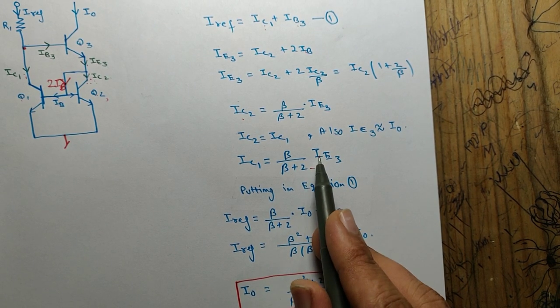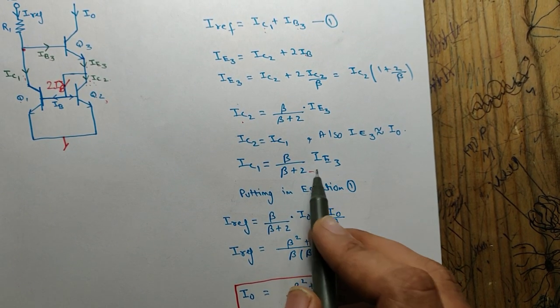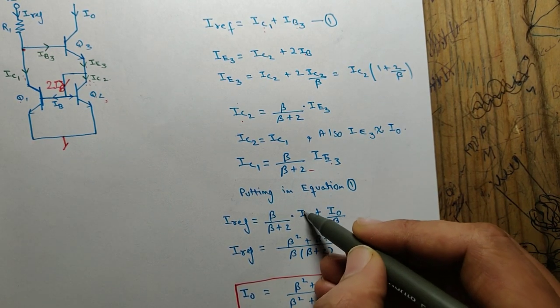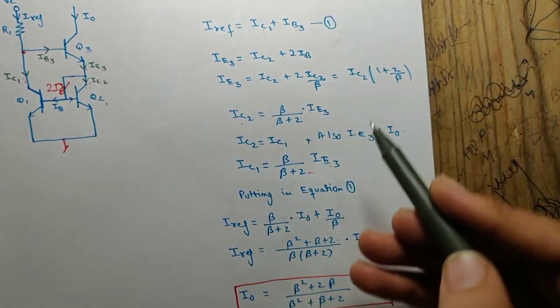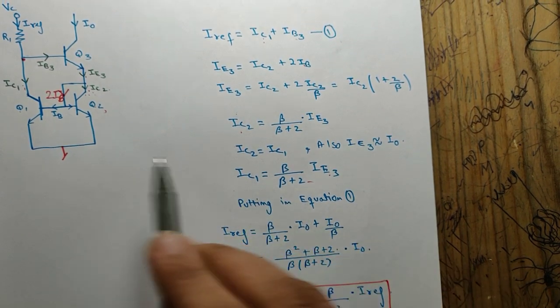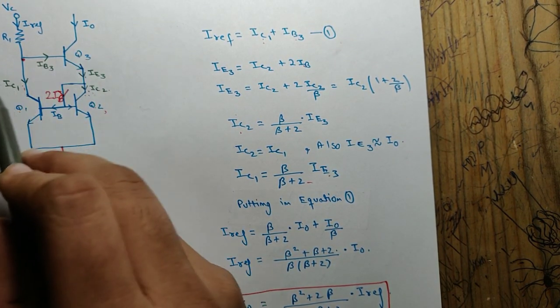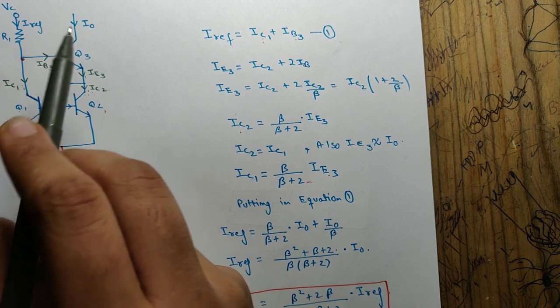If I put it here, I get beta upon (beta plus 2) times ie3. Instead of ie3 I will write i0 here. And instead of ib3 I will write i0 by beta, because ib3 is the base current of transistor 3 and i0 is the collector current of transistor 3.